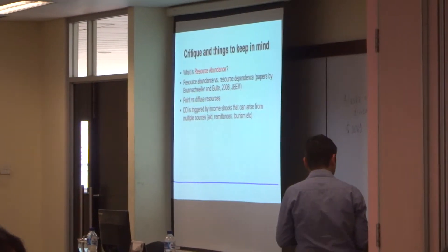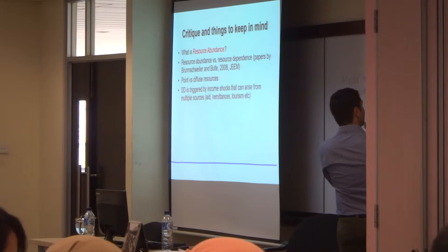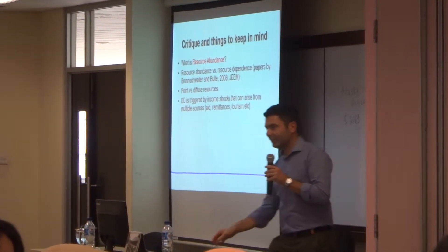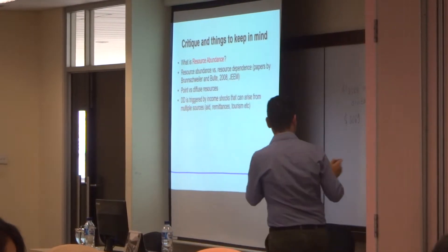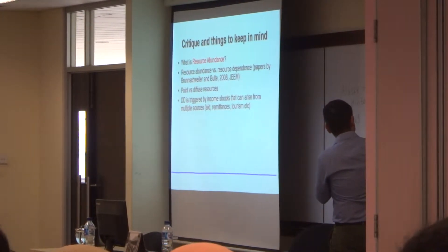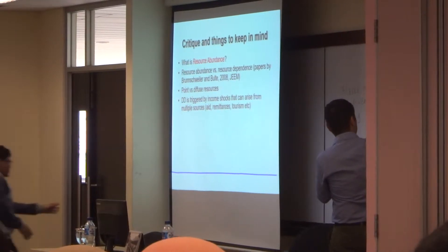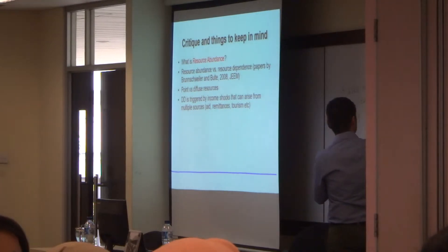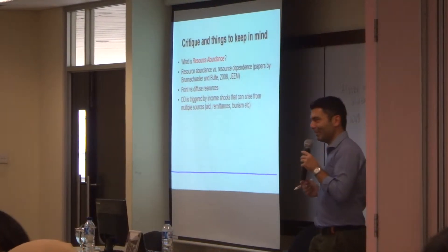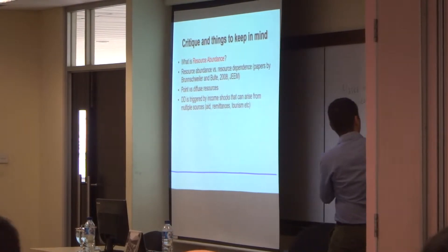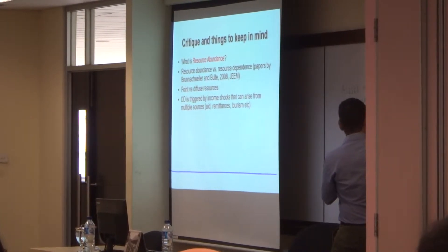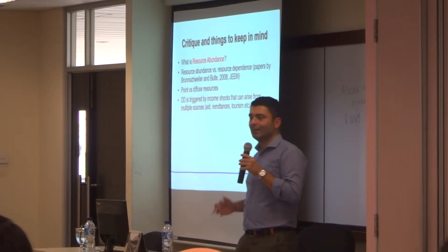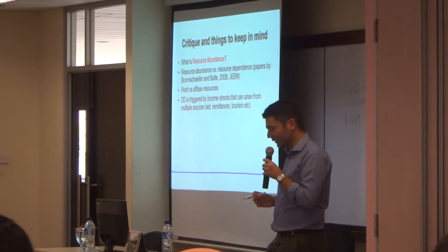There is a very famous paper from 2008 — they were the first ones who made the distinction between resource abundance and resource dependence, at least in the empirical econometrics literature.